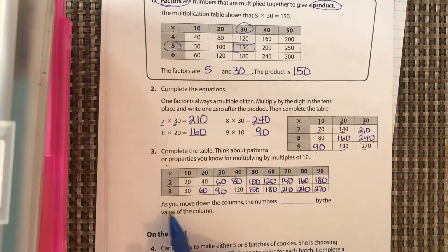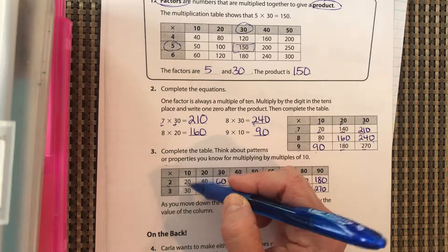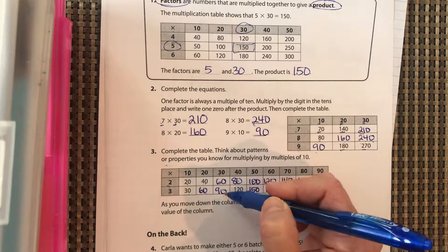Okay, you should have 80, 100, 120, 140, 160, and 180; 60, 90, 120, 150.